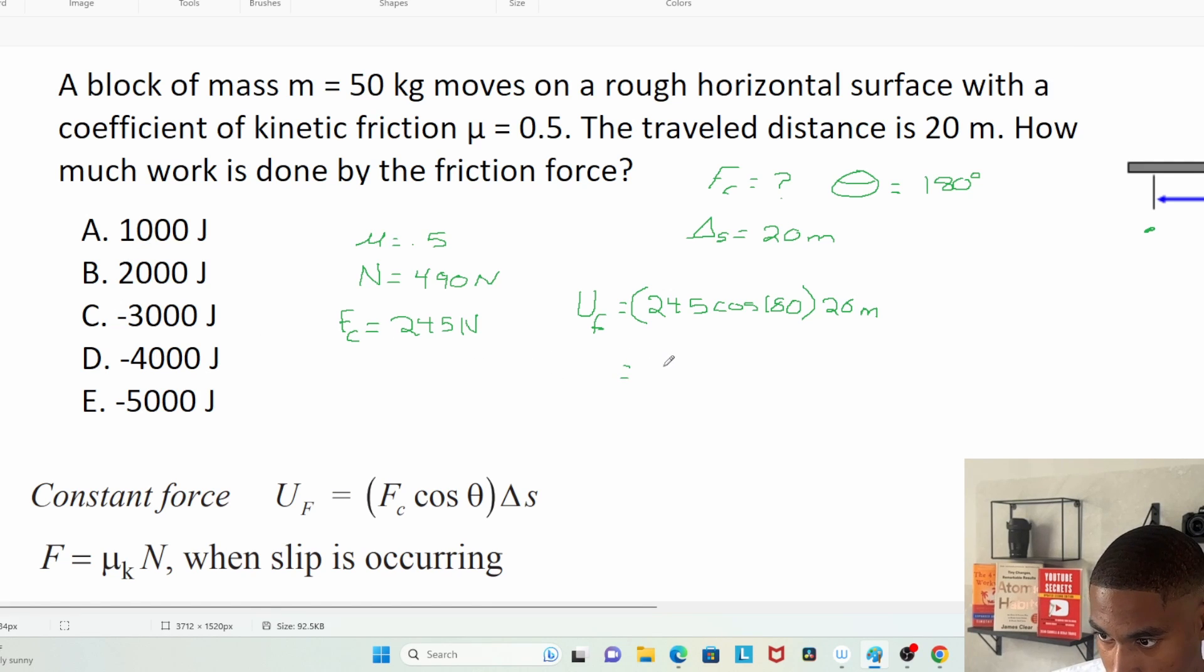I get 245 cosine 180, which gives me negative 4,900 joules. So our answer is going to be closest to E, negative 5,000 joules.